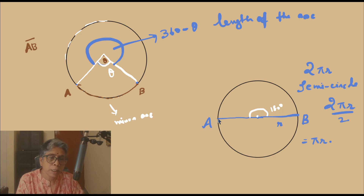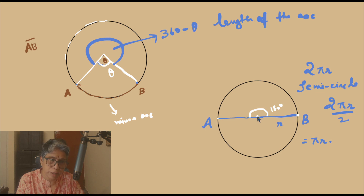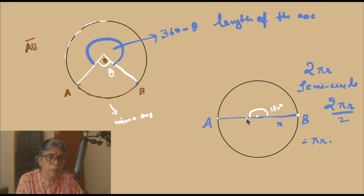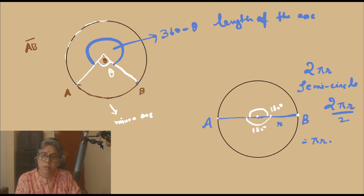Can we say that the angle subtended by the diameter at the centre is 180 degrees? And it also makes sense because 180 plus 180 — the total angle is 360 degrees.